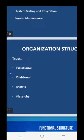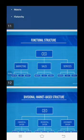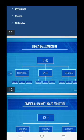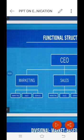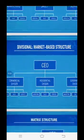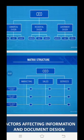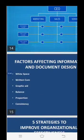Next we move to the four types of organizational structures. The first is the functional structure, where under the CEO we have marketing, sales, and services with their subdivisions. The second is the divisional market-based structure, with commercial, residential, and government divisions. The third is the matrix structure, where the CEO, marketing, sales, and services form lateral subheadings.